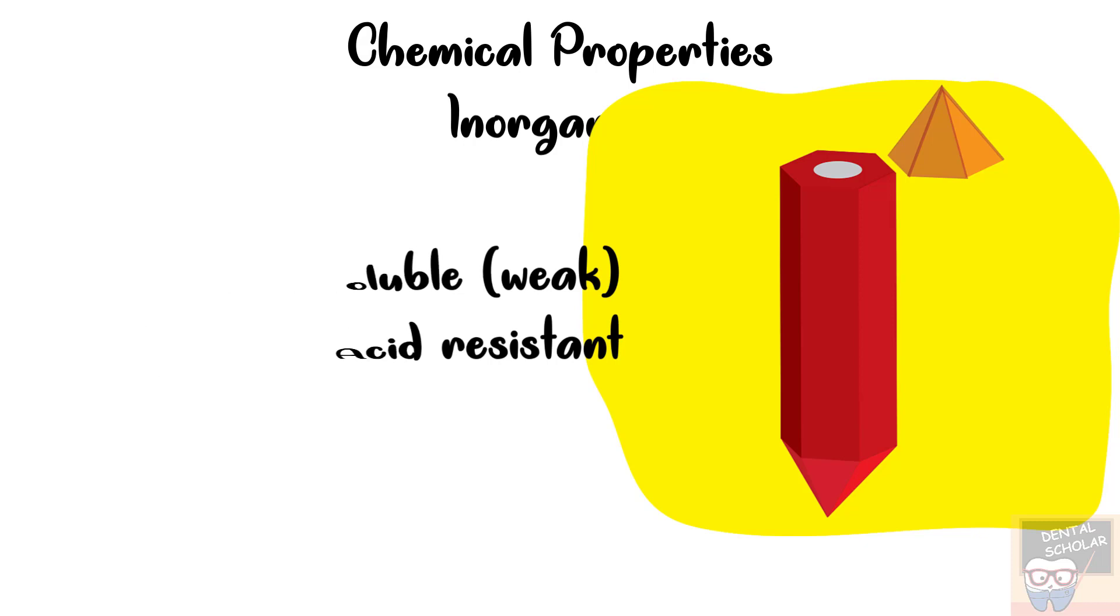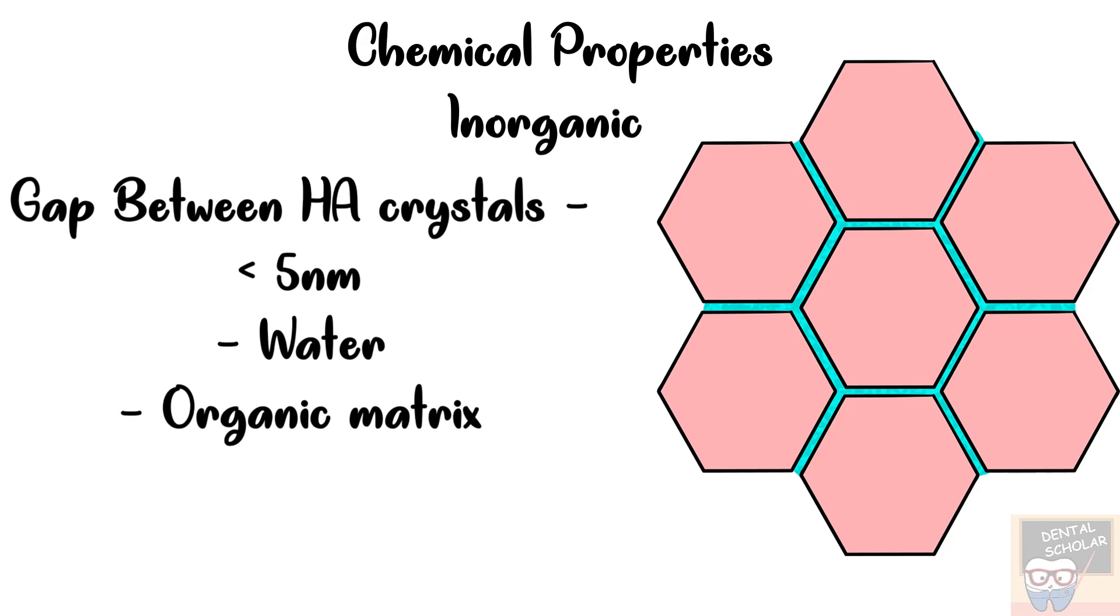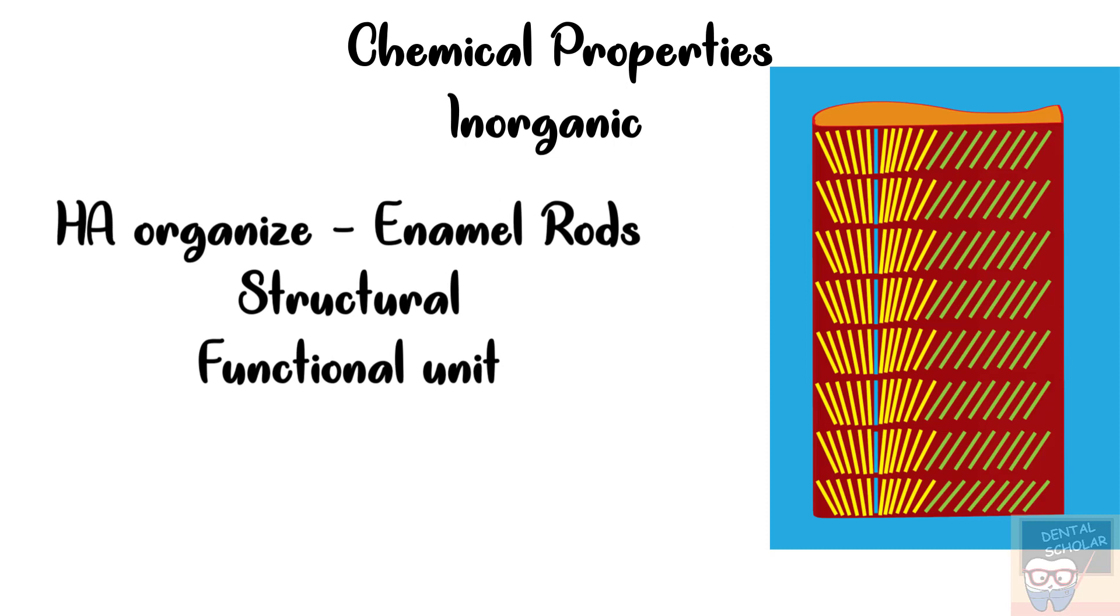Let's look at the arrangement of hydroxyapatite crystals. There is a gap of less than 5 nm between adjacent crystals and this gap contains water and organic matrix. The hydroxyapatite crystals in enamel follow a specific arrangement and this arrangement is described as enamel rod. The enamel rods are the structural and functional unit of enamel. And we will discuss about enamel rods in more detail in our next video on enamel.